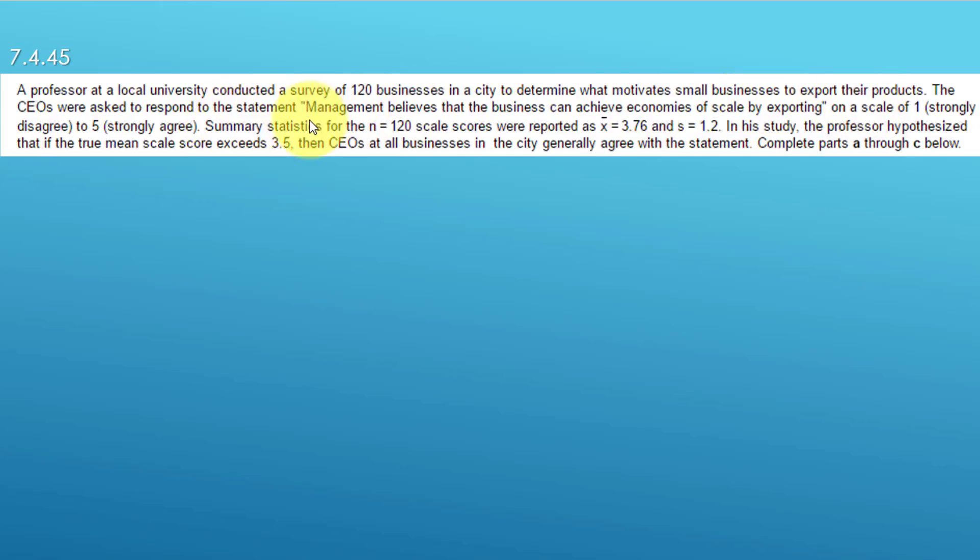The CEOs were asked to respond to a statement: Management believes the business can achieve economies of scale by exporting on a scale of 1 (strongly disagree) to 5 (strongly agree). That's a Likert-like scale. We're given summary statistics: n of 120, scores with a single mean x̄ = 3.76, and a standard deviation of 1.2, which must be the sample standard deviation. The professor hypothesized that if the true mean scale score exceeds 3.5, then CEOs at all businesses in the city generally agree with the statement.